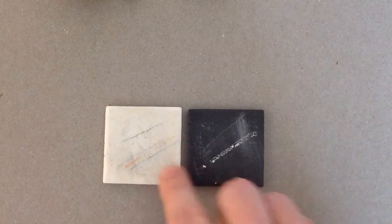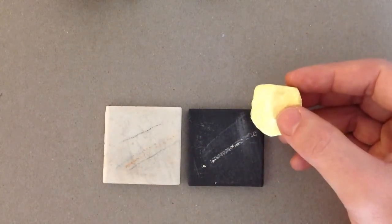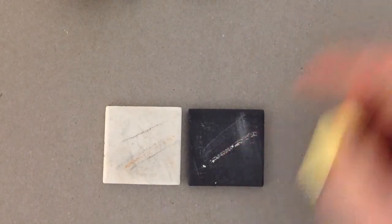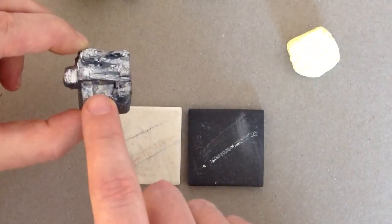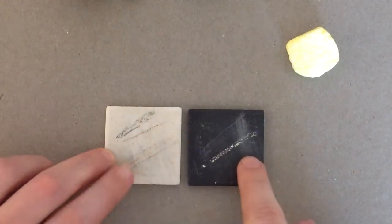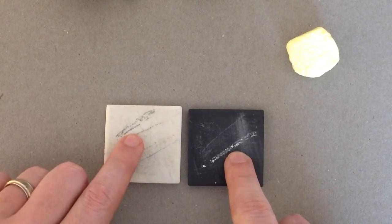Now, you'll notice here I have two streak plates. What I like to do is I like to give my students the ability to get the contrast of a light mineral on a dark streak plate, but I also like to give them the opportunity for a dark mineral like galena on a light streak plate. So you can clearly see you want to get the contrast between the mineral and the streak plate.